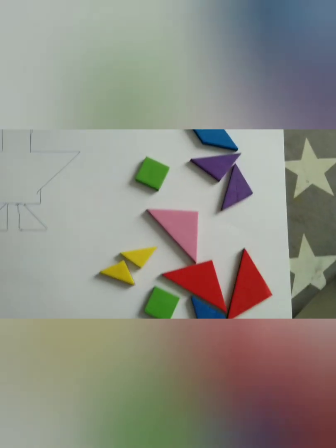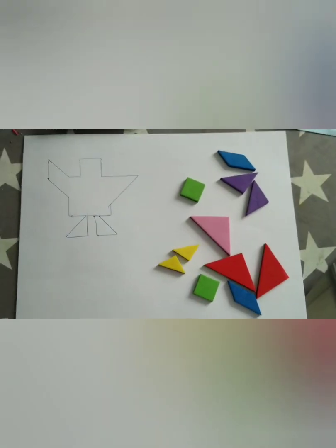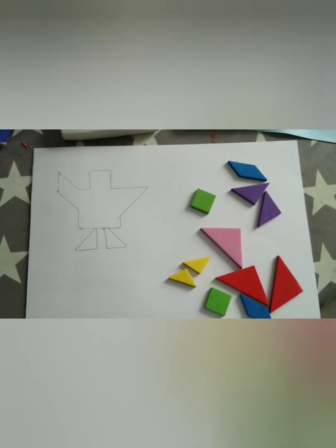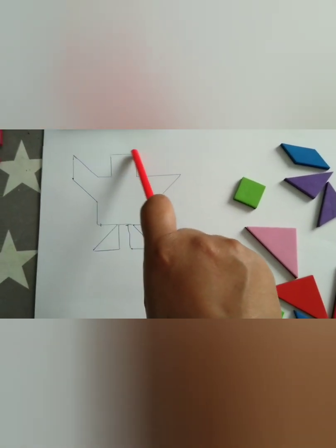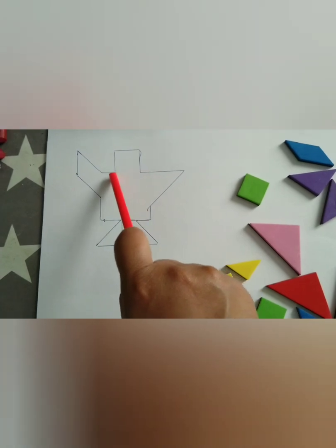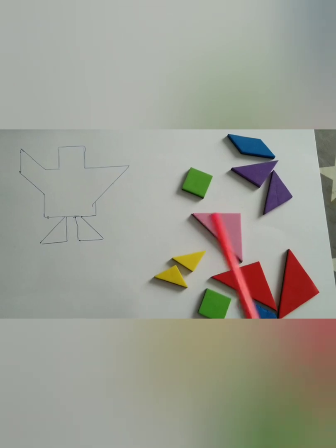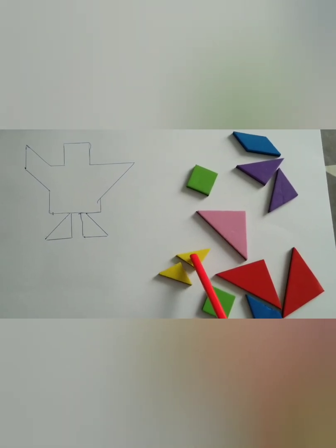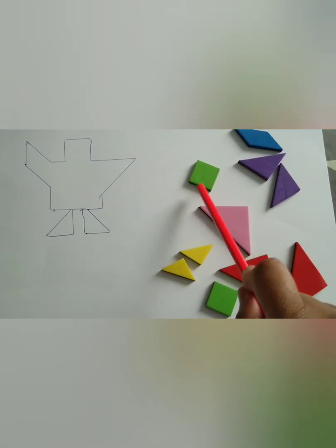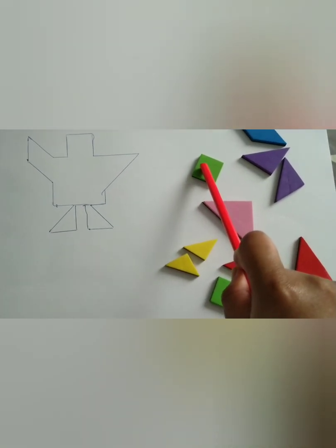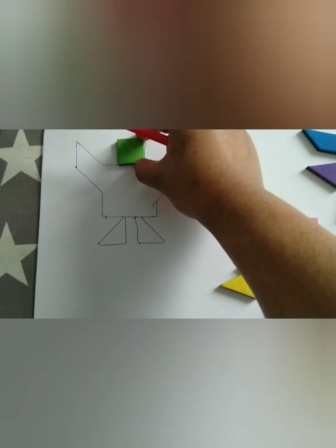Now that we are familiar with the shapes, let's try to put shapes correctly into this figure. So let's start. Let's see which shape will fit. Big triangle? No. Small triangle? No. Yes, a square will fit there. So let's drag and drop the square there. Good.